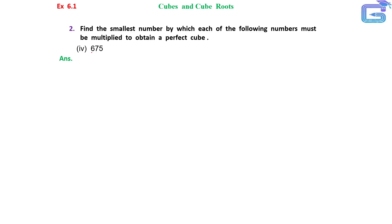So here we have to check that 675, they have already given it's not a perfect cube. Now we have to check by which number it should be multiplied to make it a perfect cube. So what we will do is we are going to find out the factors of 675 by prime factorization method.